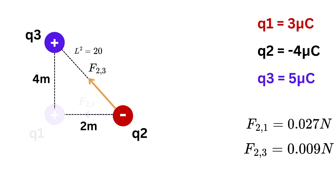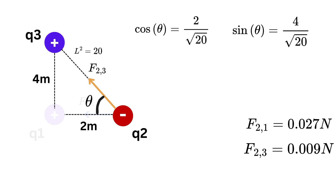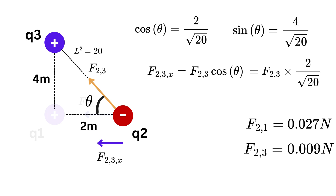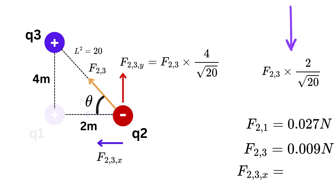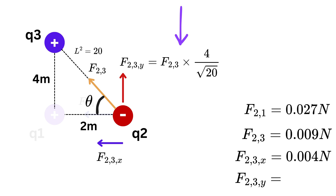We look at the triangle formed by the positions of q2 and q3. Letting theta be the angle, cos θ = 2/√20 and sin θ = 4/√20. Therefore, the x-component of F(2,3) is F(2,3) × 2/√20, and the y-component is F(2,3) × 4/√20. Calculating these: the x-component is approximately 0.004 newtons to the left, and the y-component is approximately 0.008 newtons upward.